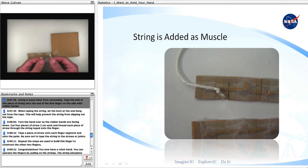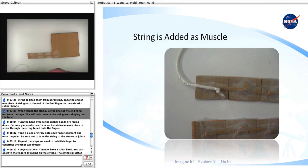Tape the end of one piece of string onto the end of the first finger on the side with rubber bands. When taping the string, let the knot at the end hang out from the tape. This will help prevent the string from slipping out of the tape.